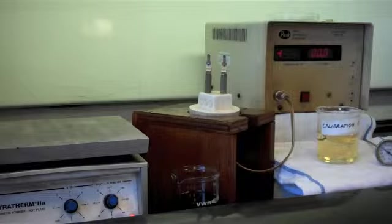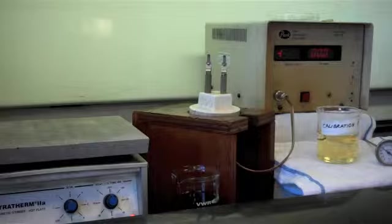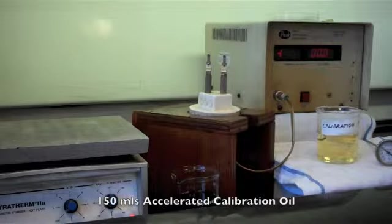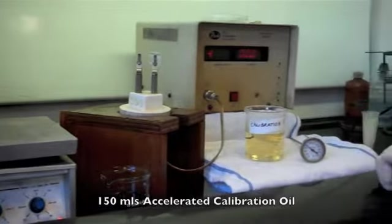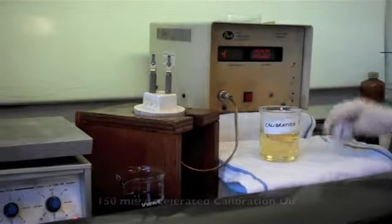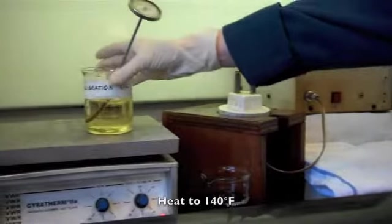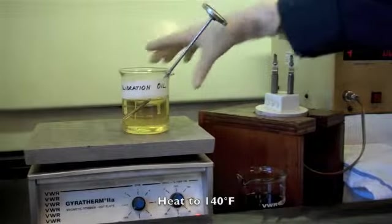Before testing an oil sample, we need to calibrate the apparatus. We are going to use an accelerated calibration oil as a reference. How do we do it? We pour 150 ml of the accelerated calibration oil in a beaker and heat it up on the hot plate to 140 degrees Fahrenheit.